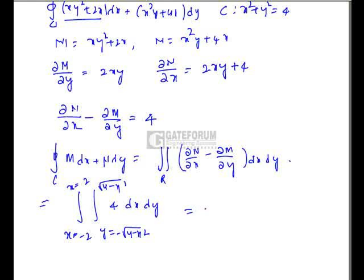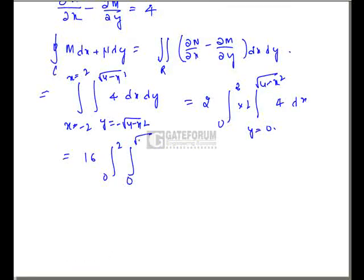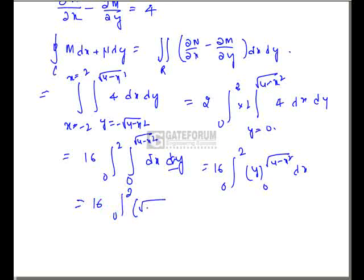And also, clearly the function is even. So I can write this first integral as 2 times integral 0 to 2, and the second as y = 0 to √(4-x²) into 4 dx dy. That is, 2 times 2, which will be nothing but 16 times integral from 0 to 2 and 0 to √(4-x²) dx dy. This can be written as 16 times integral from 0 to 2, y from 0 to √(4-x²) dx, which is 16 times integral 0 to 2 √(4-x²) dx.